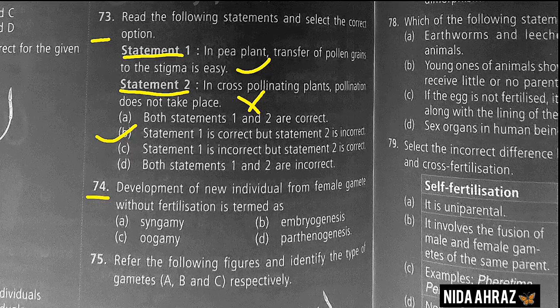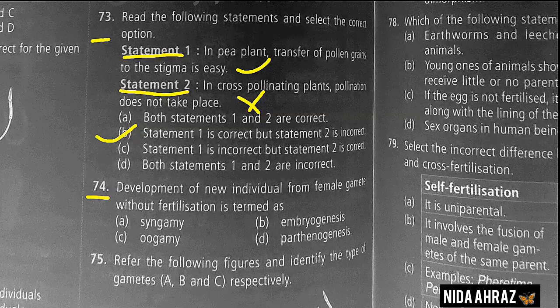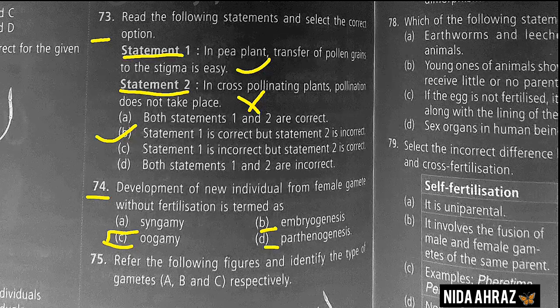Development of a new individual from female gametes without fertilization is termed as syngamy, embryogenesis, oogamy, or parthenogenesis. The correct choice is option D: parthenogenesis.